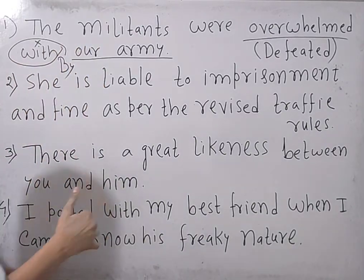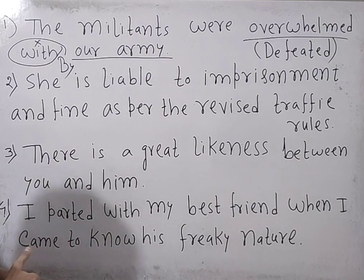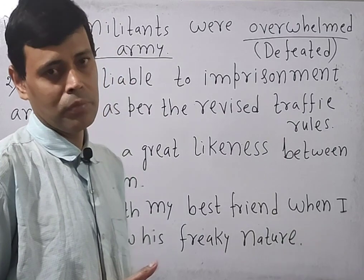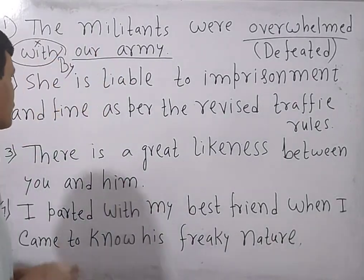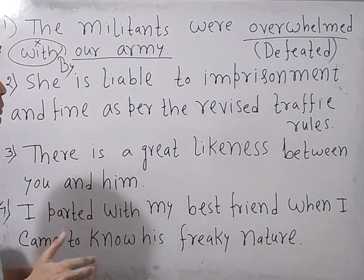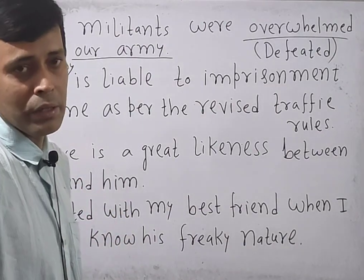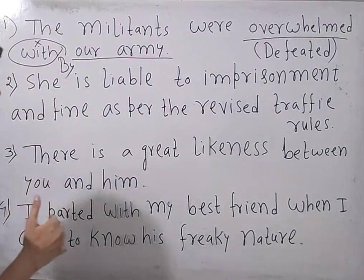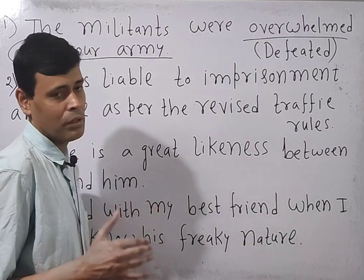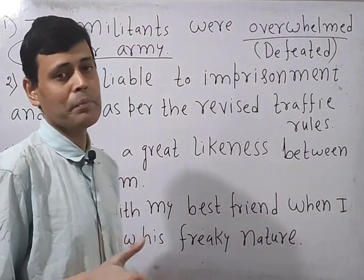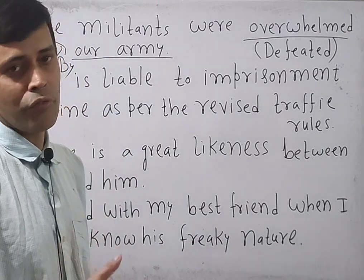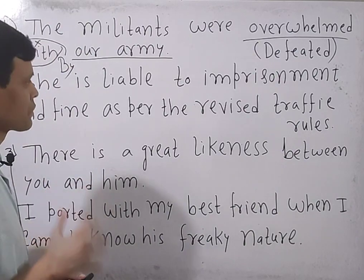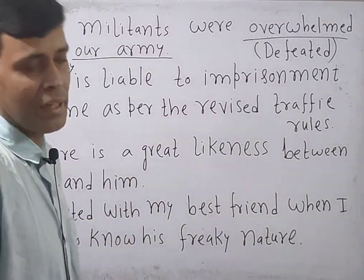If I say she is liable, meaning responsible for imprisonment, it does not convey a concrete meaning. But if I say she is worthy of punishment or suitable for imprisonment, it gives a much brighter meaning. So here, 'liable' means suitable or deserving, and whenever liable means suitable or deserving, instead of 'for', 'to' is the perfect preposition. Since 'to' is written here, the sentence does not contain any error.